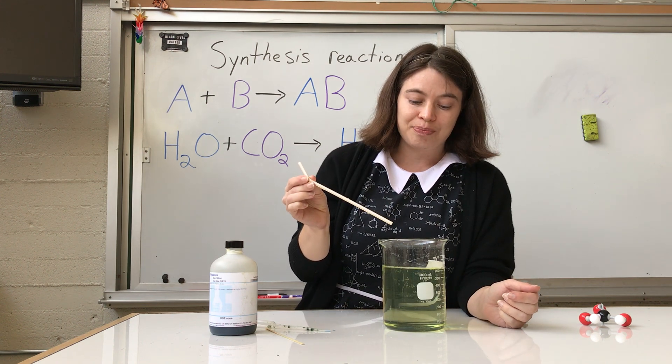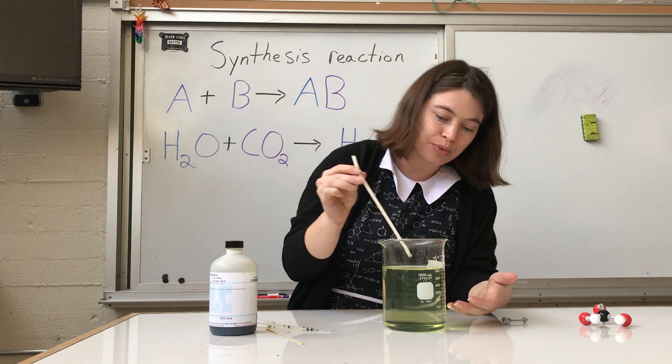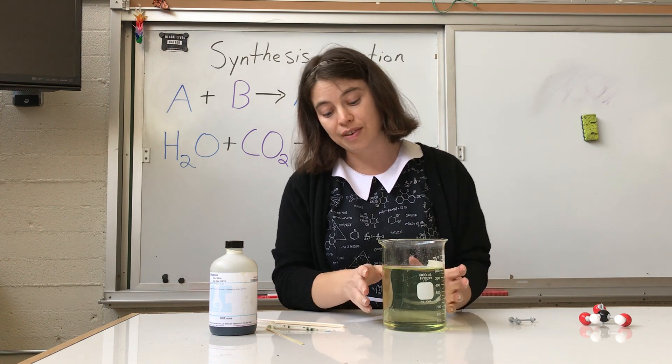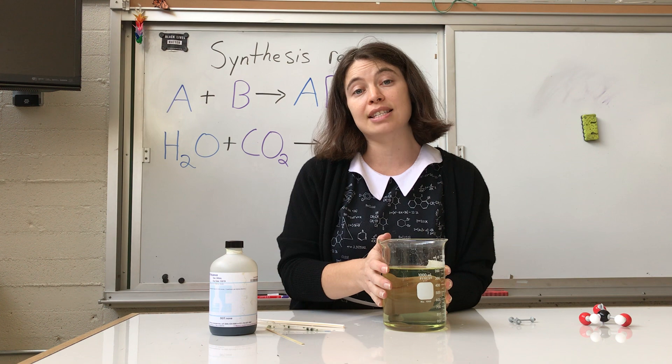And this is now acidic. So take a look at this. You can really see the change in color. That yellow color means that I have changed the pH of this beaker enough that this is noticeably an acid.